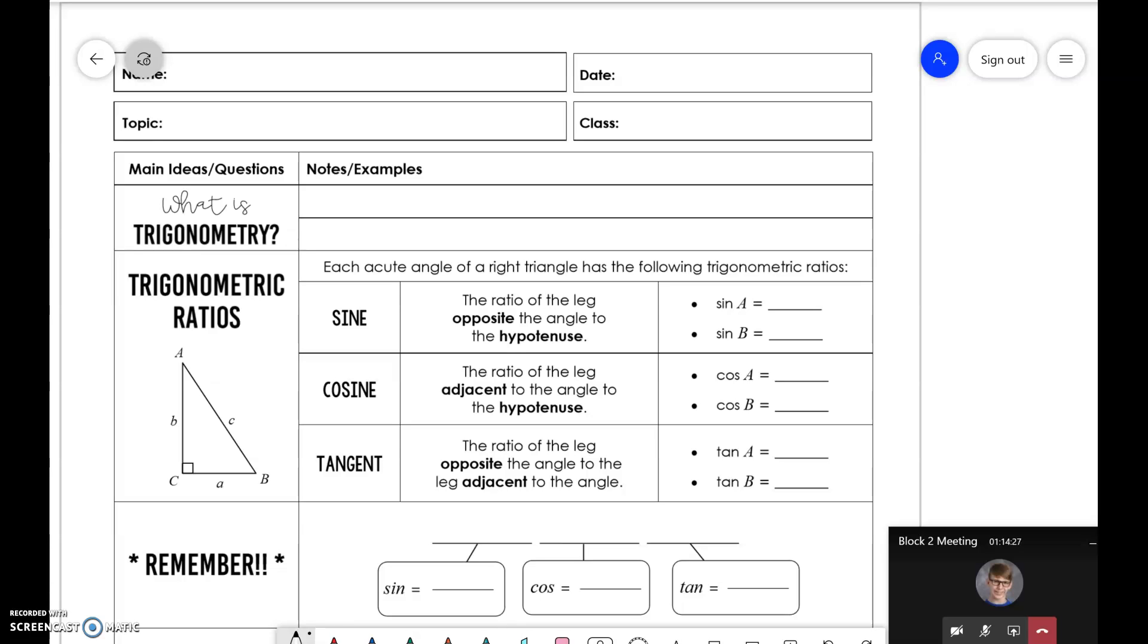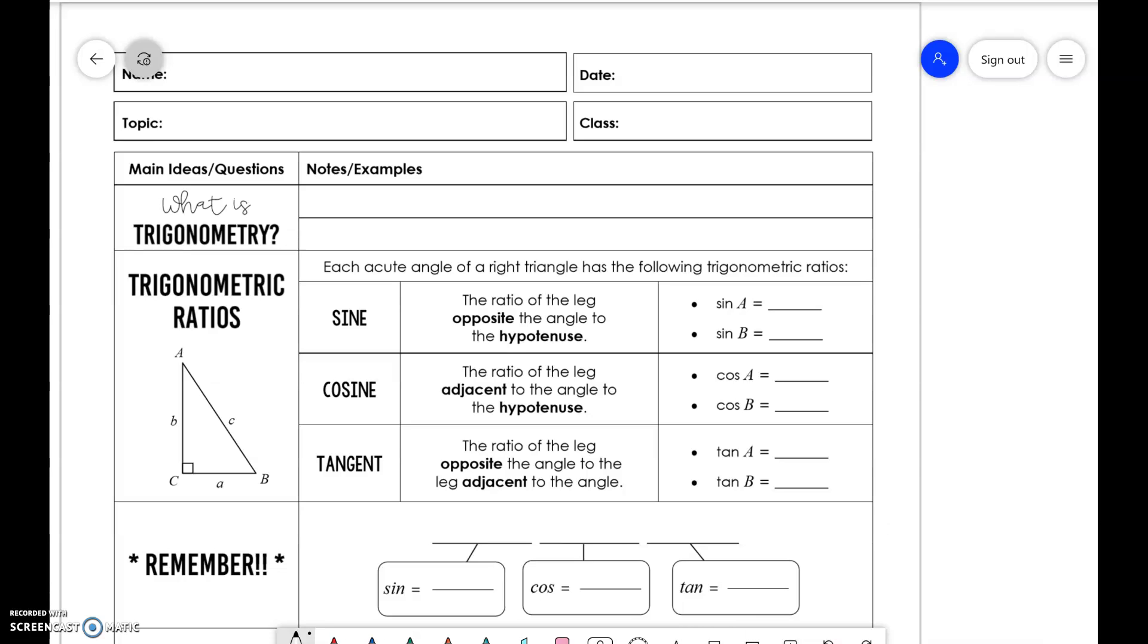All right, hey everybody, we're going to talk about what is trigonometry today and how trigonometry relates to right triangles. It is the study of triangle measurements.